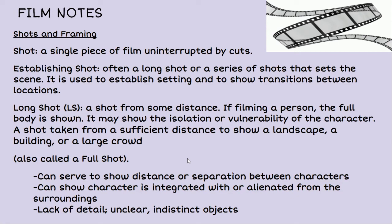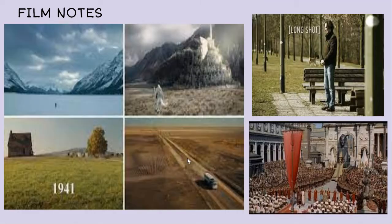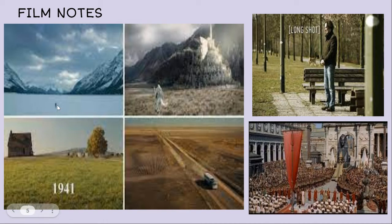A long shot can show that a character is integrated or alienated from their surroundings. If you took a long shot downtown and showed a tiny person next to a skyscraper, it could show how insignificant they are. Or if it's far enough away, it'll leave details out and leave surrounding objects indistinct, because you're blurring things out at a distance. Here you can see how small a person is with all the mountains and snow — how insignificant people are relative to their surroundings.